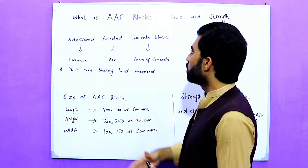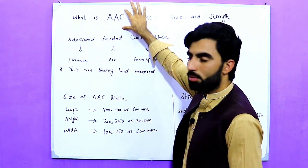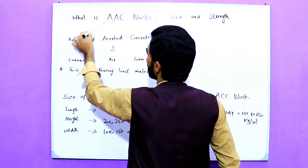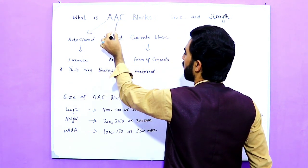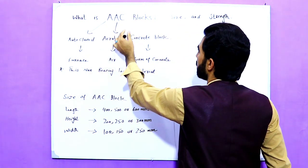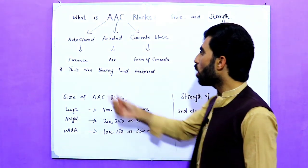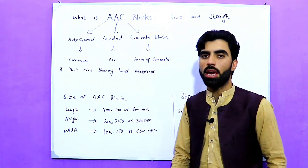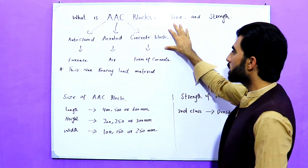First of all I will tell you the acronym of AAC blocks. Here 'A' stands for Autoclaved, the other 'A' stands for Aerated, and 'C' stands for Concrete Block. So AAC stands for Autoclaved Aerated Concrete Block.